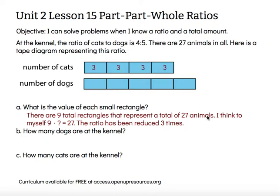This is like looking at 3 groups of 4 cats and 5 dogs. This is one of the 3 groups that we're looking at. So each of those rectangles represents 3 animals. Letter B: how many dogs are at the kennel?